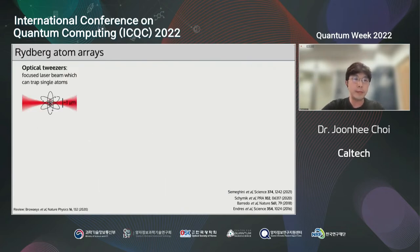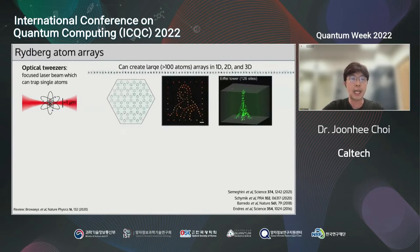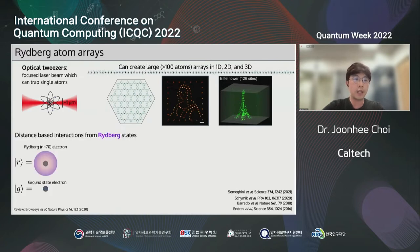First off, let me briefly describe a quantum device based on single atom arrays trapped in optical tweezers. Recently, this optical tweezers system has become a very powerful tool that allows us to generate defect-free large-scale atom arrays with arbitrary dimensions and geometries. In particular, when using a neutral atom, one can make use of its ground state and highly excited states, so-called Rydberg states, to define a qubit to encode quantum information.